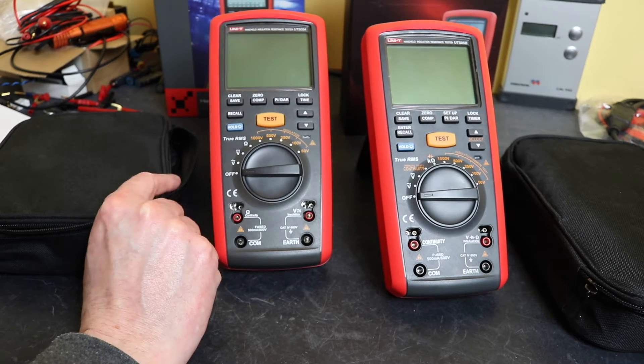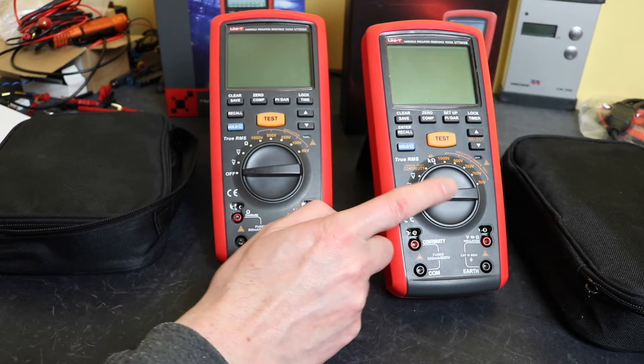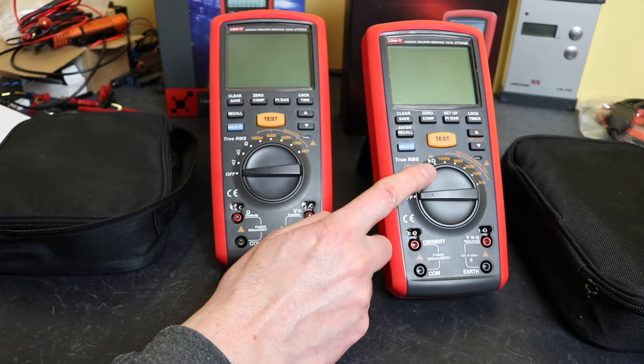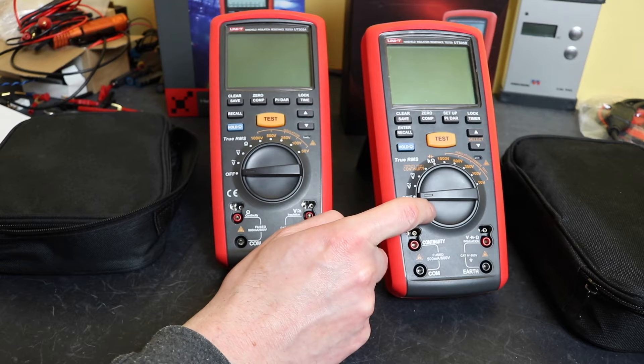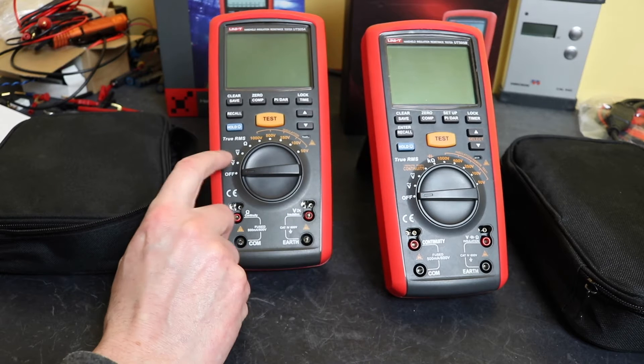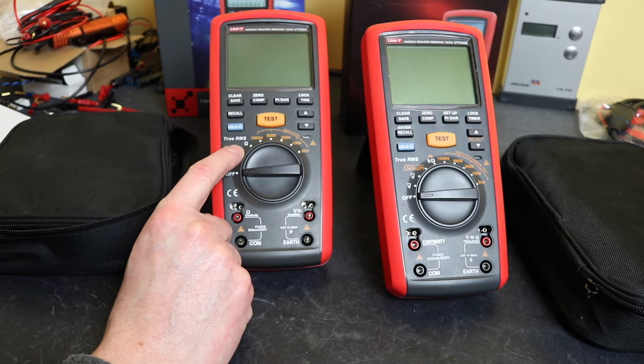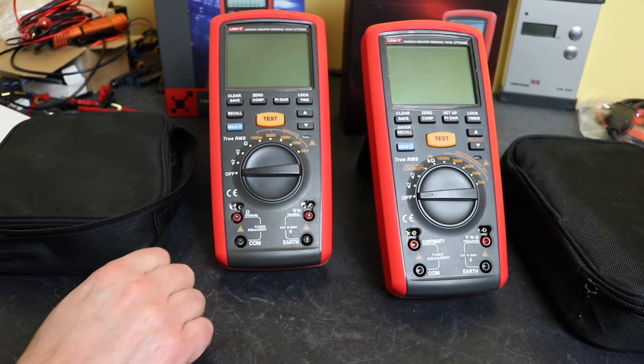The biggest factor that you will see is this has a split continuity, kilo ohms, and a capacitance function after the voltage, whereas UT505A only has the ohms function.